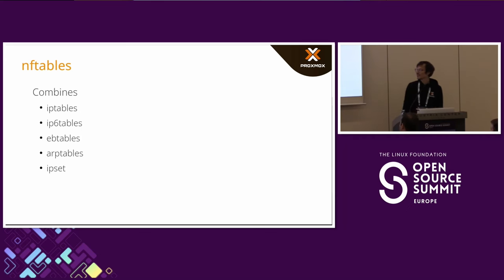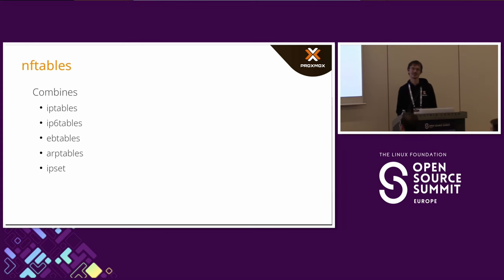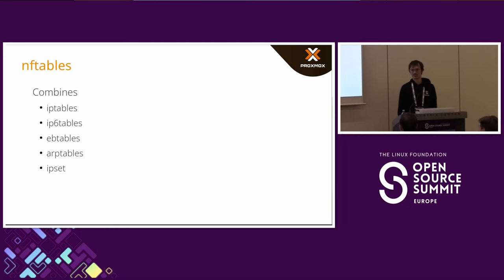NF Tables aims to combine quite a few tools. As you might know, there's IP Tables and IP6 Tables — if you wanted IPv4 or IPv6 filtering, you had to use two different tools. There's EB Tables for layer 2 or bridge filtering, ARP Tables for ARP, and of course many different IP Tables extensions such as IP sets.